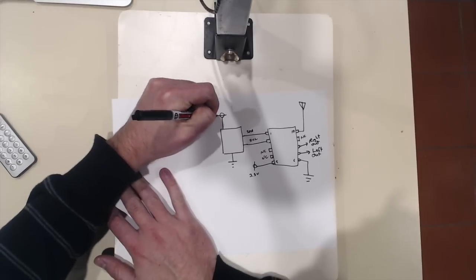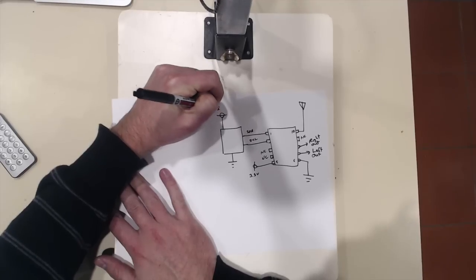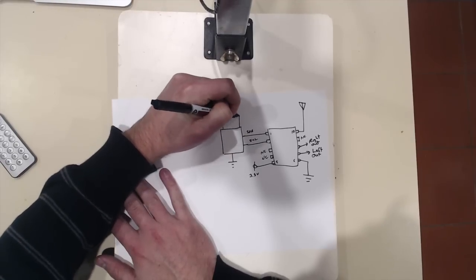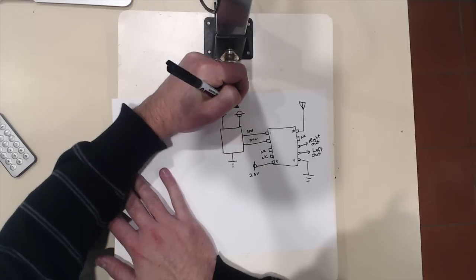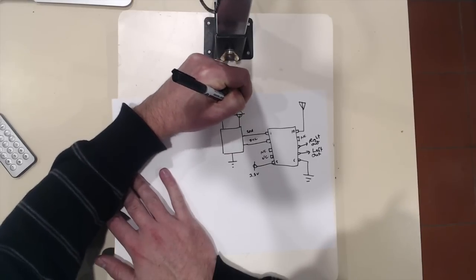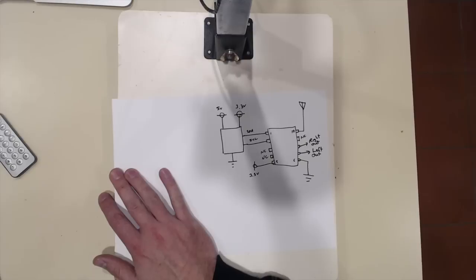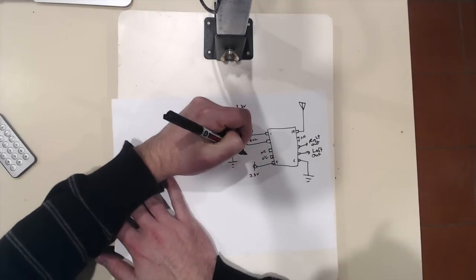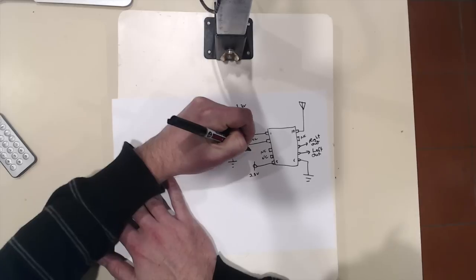you connect it to 5 volts on the high side. And, you connect it to your low side voltage. So, in this case, 3.3 volts. And, what it'll do is shift the logic level signals.